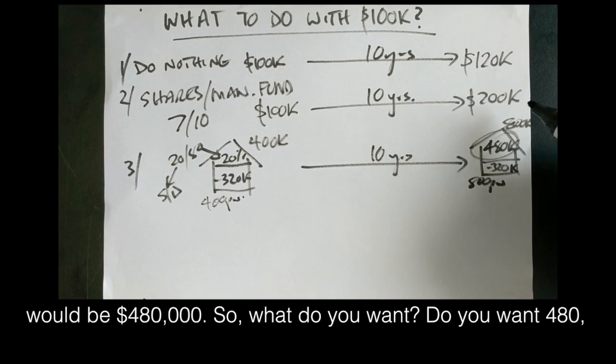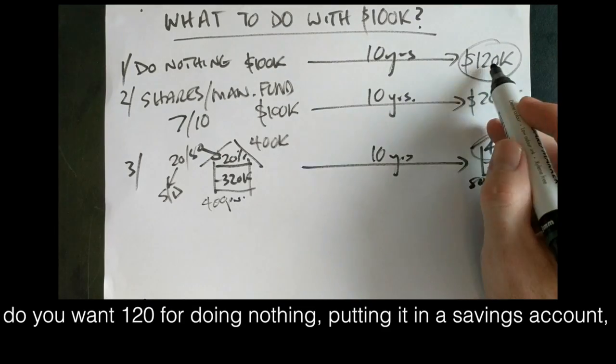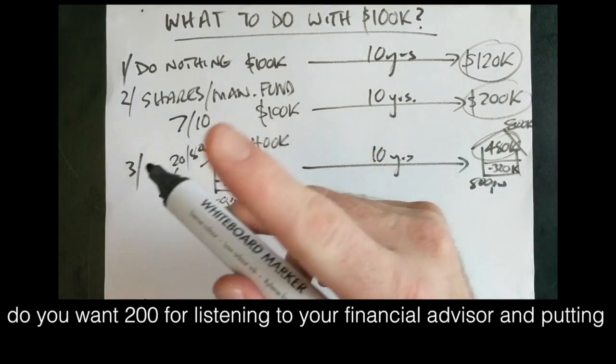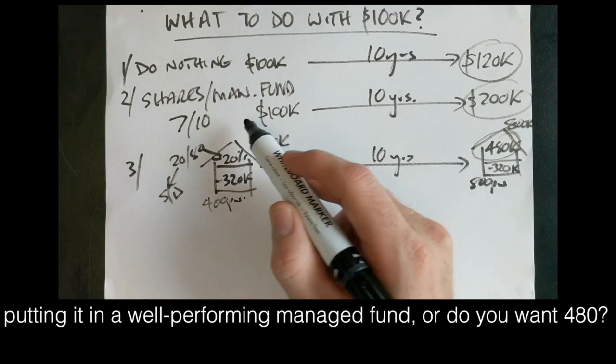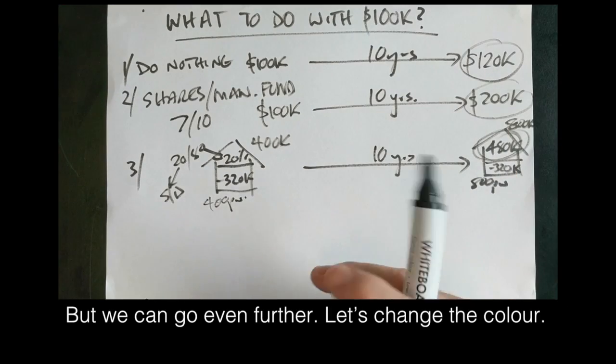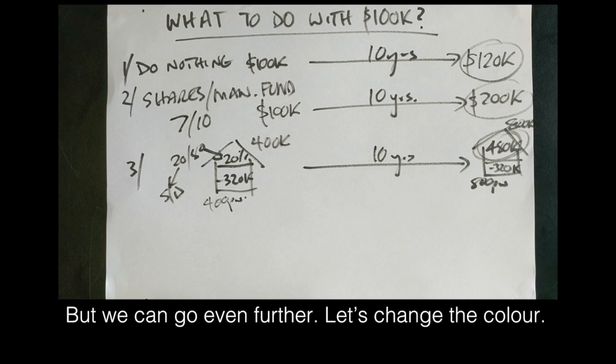So what do you want? Do you want $480,000? Do you want $120,000 for doing nothing, putting a savings account? Do you want $200,000 for listening to your financial advisor and putting in a well-performing managed fund, or do you want $480,000? But we can go even further. Let's change the color.